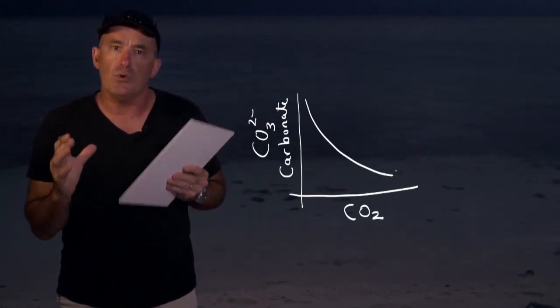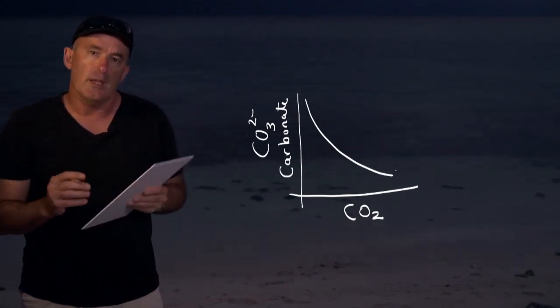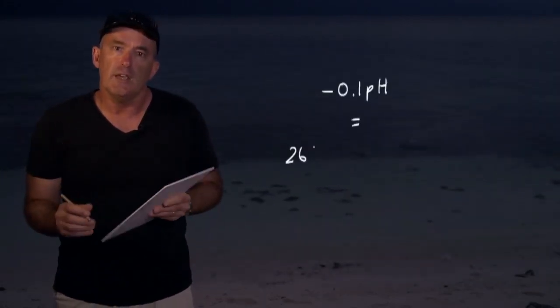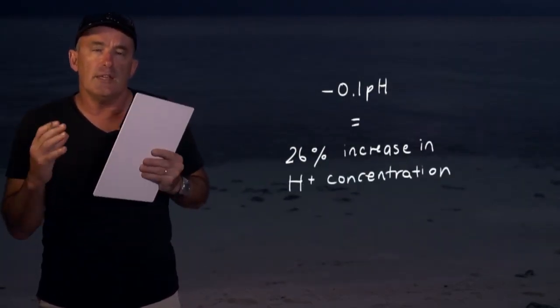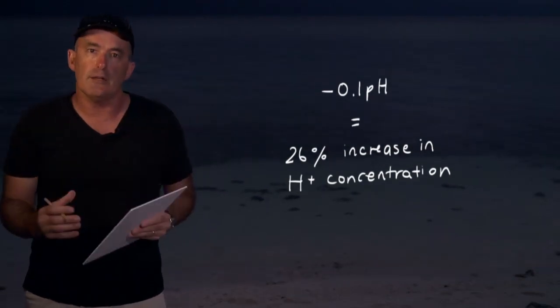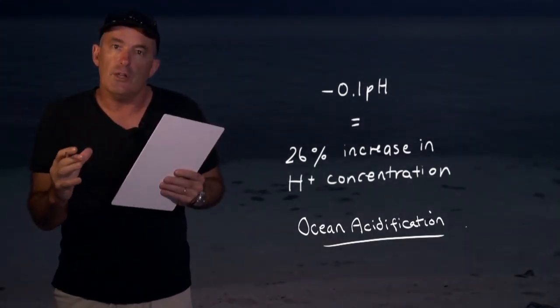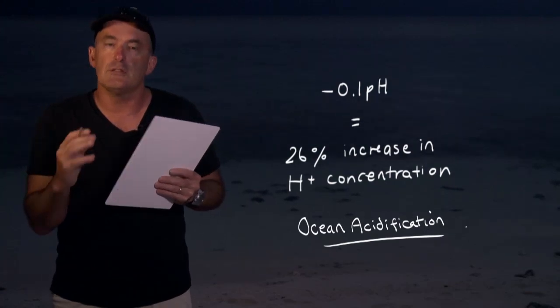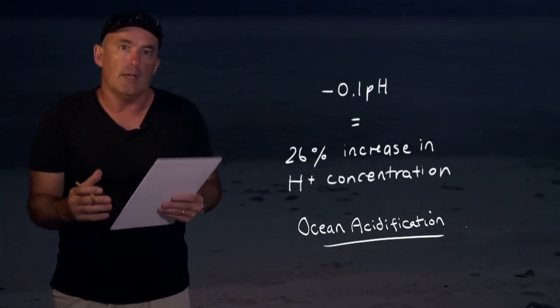This makes it harder for organisms to make their shells and skeletons given that the carbonate ion concentration has decreased. As atmospheric carbon dioxide has increased since the beginning of the Industrial Revolution, the pH of the ocean has decreased by 0.1 pH units. This means that the proton concentration has actually increased by 26% and that the concentration of carbonate ions has decreased by a similar amount — a 26% drop in carbonate ion concentration. This phenomenon is known as ocean acidification and will be the subject of later lectures, and there is serious concern over its impact on marine organisms and ecosystems.